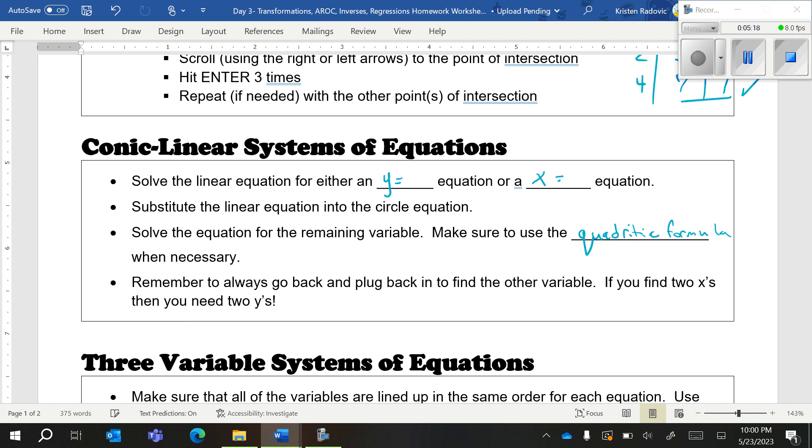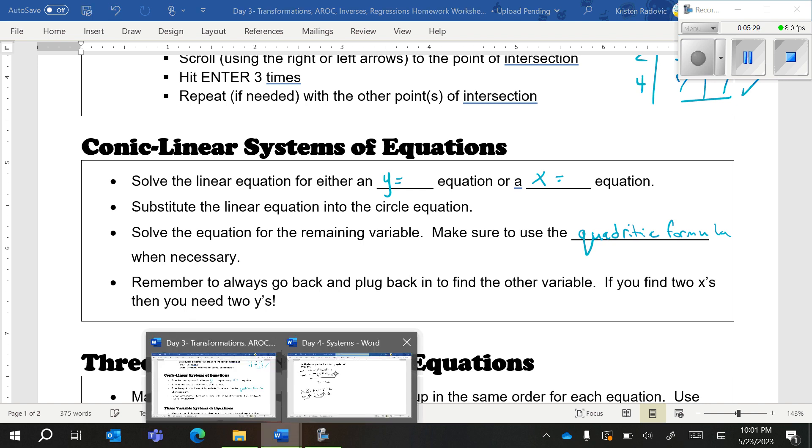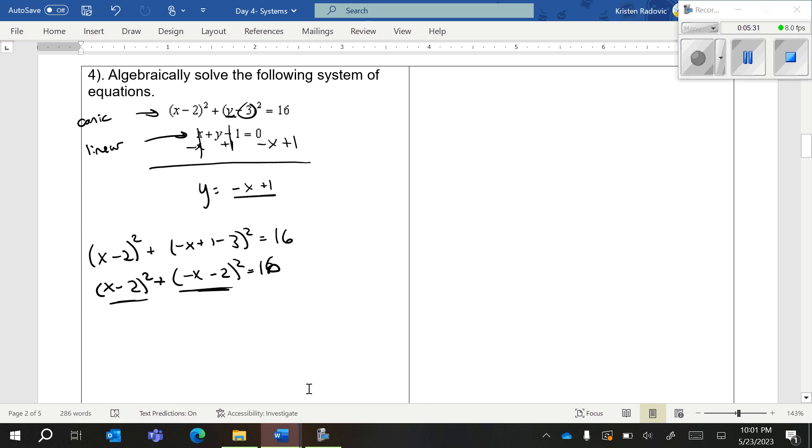Once you get your two values, you would have to then plug it back into one of the original equations and you would have to find your y values. You might get x equals this and x equals that. You need to then plug it into this equation and figure out what is y equal, because your answer should be two coordinates. You want x comma y and x comma y again.